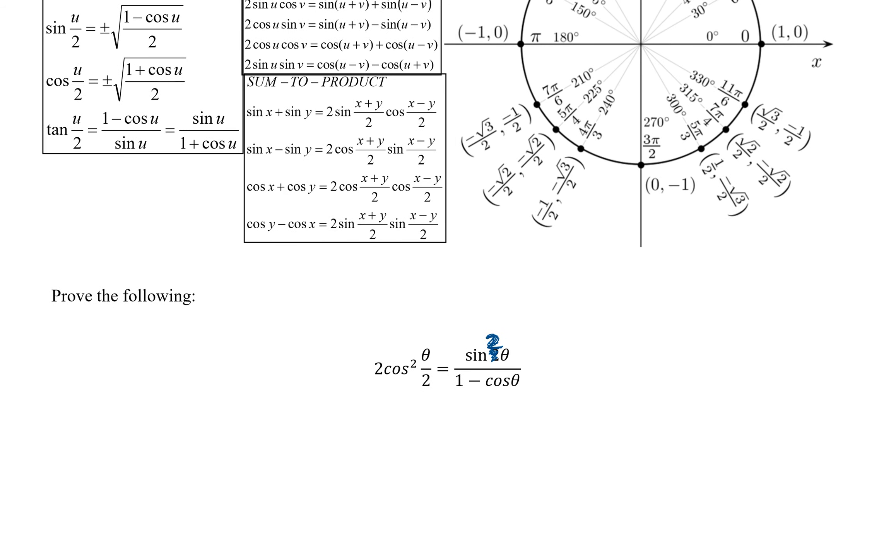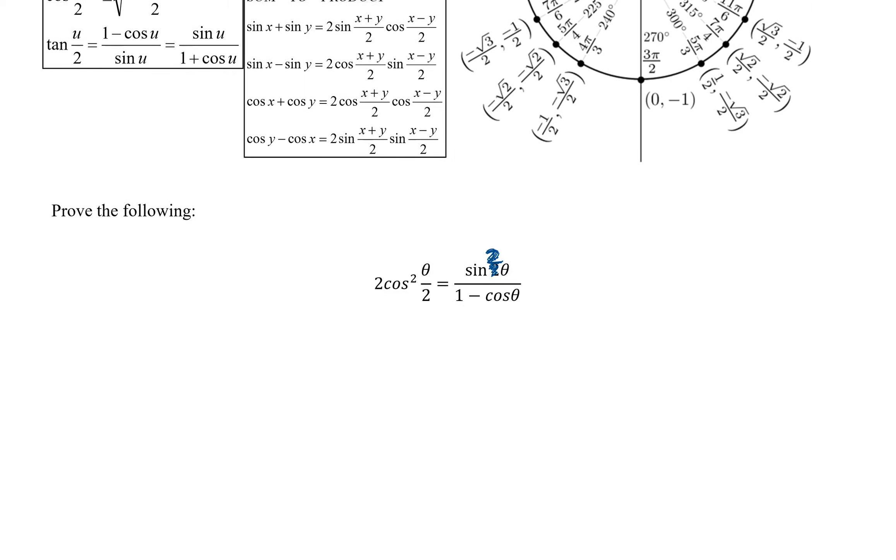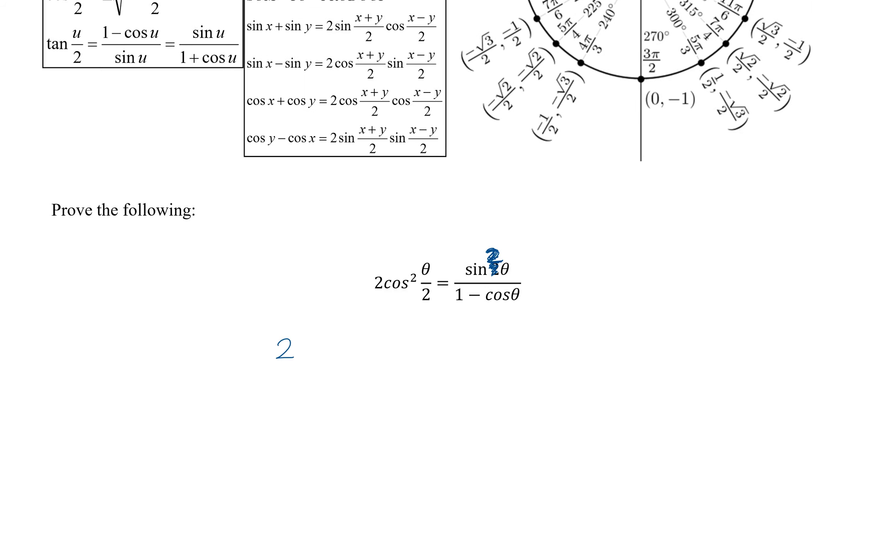So our cosine u over 2 is the square root of this. So we end up with 2 cosine squared theta over 2. We want to tell us where we are starting, and then we place it in.